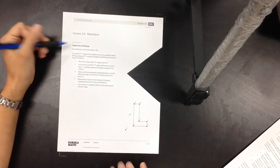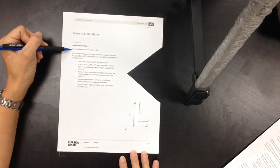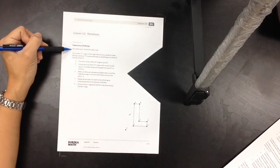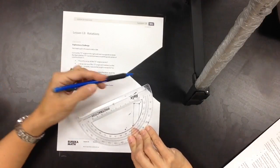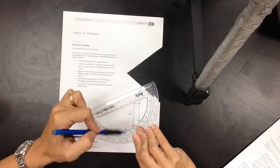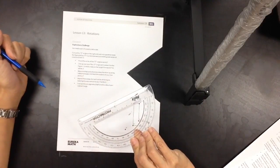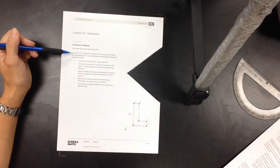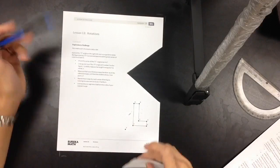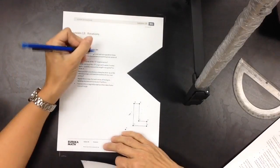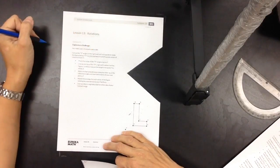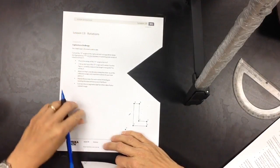If you go to your classwork, exploratory challenge, you're going to need a pair of scissors and a ruler. I have a pair of scissors and a protractor, which has a ruler on one side, but we're going to use the angle degrees as the lesson goes on. Cut out the 75-degree angle on the right, and use it as a guide to rotate the figure below 75 degrees counterclockwise around the given center of rotation, point P.